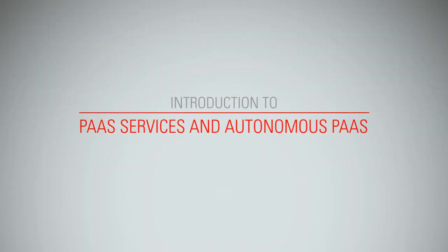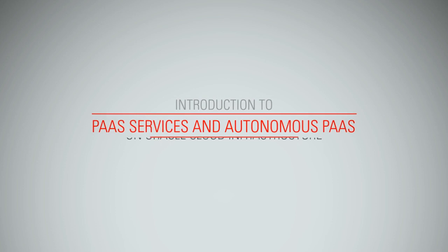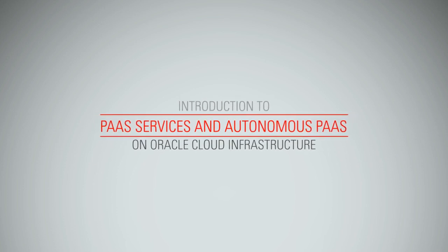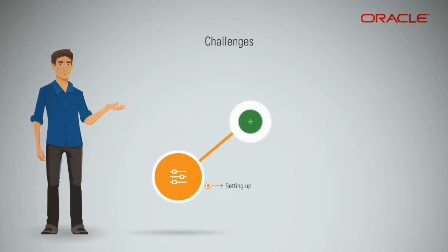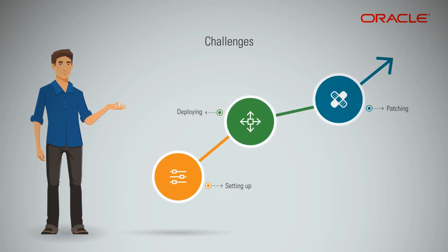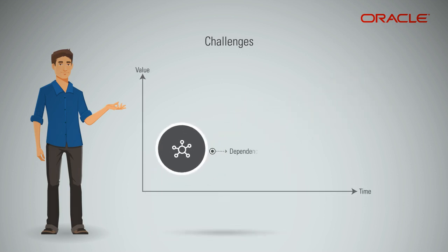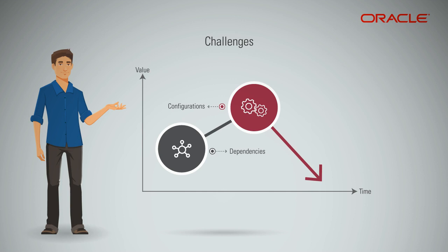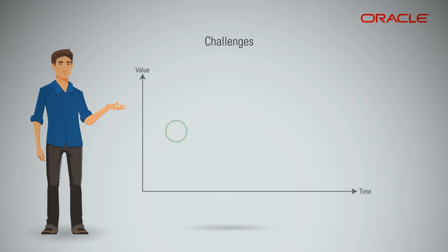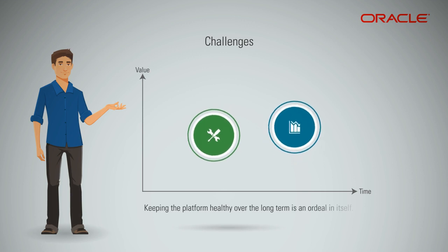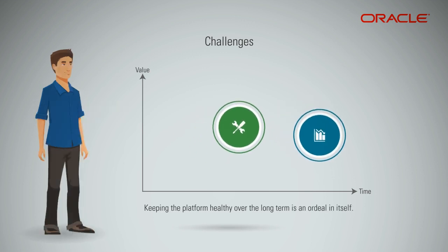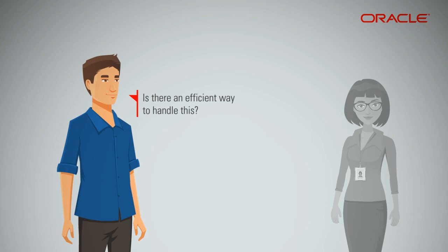Setting up, deploying, patching, and maintaining an application platform never seems to be quite as simple as it should be. Chasing dependencies and working out the best configurations for performance are certainly needed, but they diminish in value as the platform ages. Besides that, keeping it healthy over the long term is an ordeal in itself. Is there an efficient way to handle this?